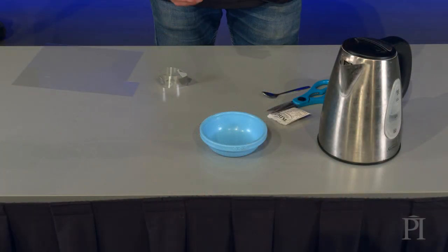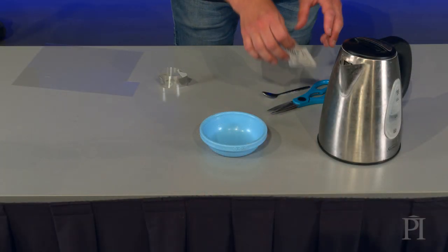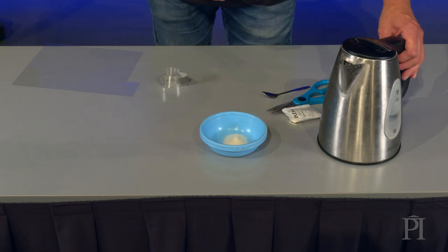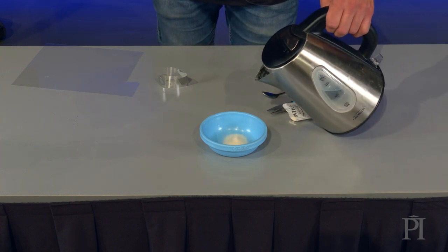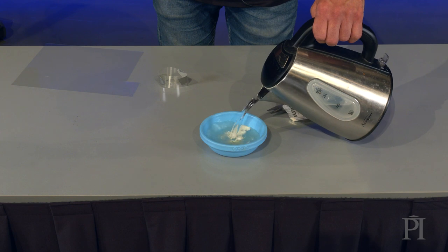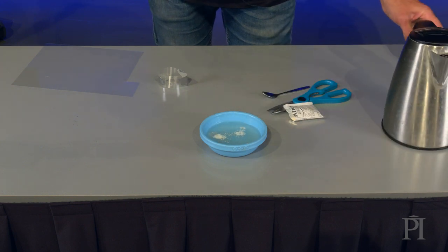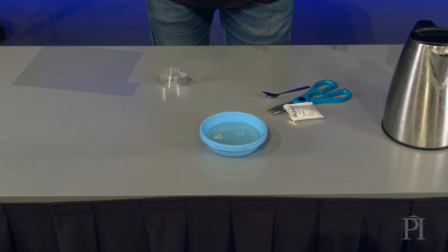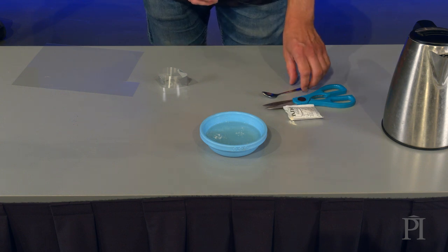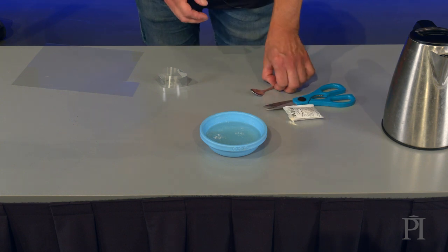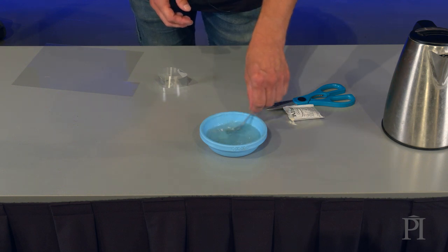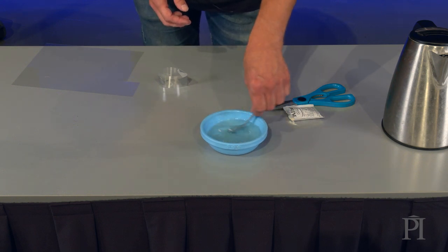To make the lens, pour gelatin powder into the dish and add boiling water to create a gelatin solution. Around one tablespoon of powder per 50 ml of water is good, but follow the instructions on your packet of gelatin powder. The mixture should be roughly 1.5 centimeters deep.